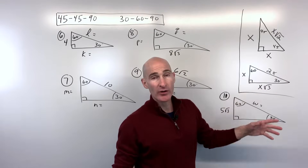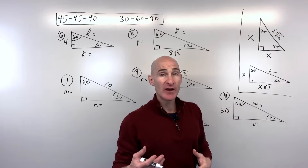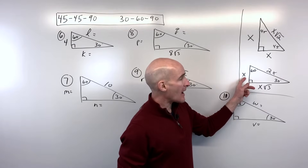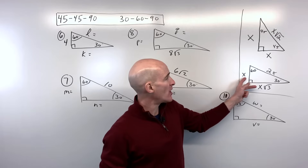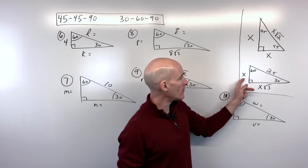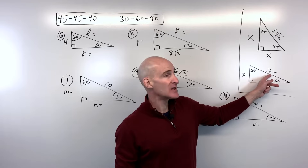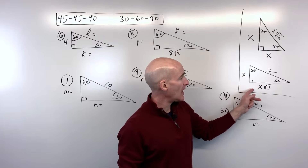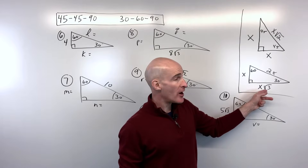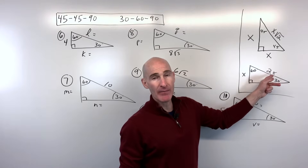Square root of 3 is about 1.7, so going from the shorter leg to the longer leg you're basically multiplying by 1.7 — but √3 gives you an exact value. If you have the shorter leg, it's easy: double it to get the hypotenuse, or multiply by √3 to get the longer leg. If given the hypotenuse, divide by 2 for the shorter leg, then multiply by √3. The tougher case is the longer leg: divide by √3 to get the shorter leg, then double it for the hypotenuse.